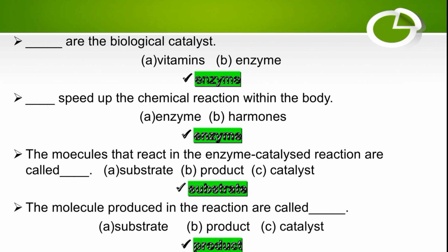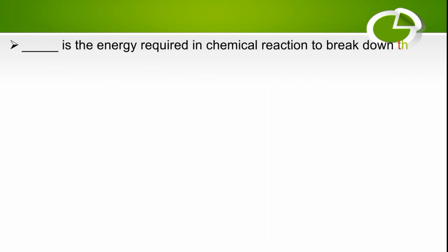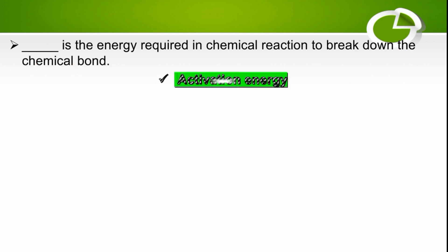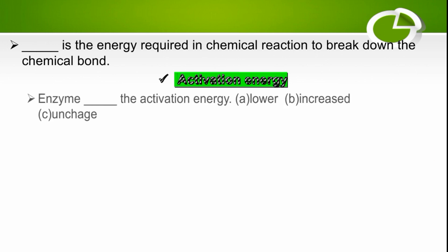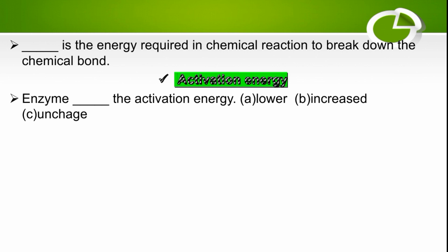The molecule produced in the reaction is called product. Activation energy is the energy required in a chemical reaction to break down chemical bonds; it is also the energy that initiates the chemical reaction. Enzymes lower the activation energy — the right option is lower.